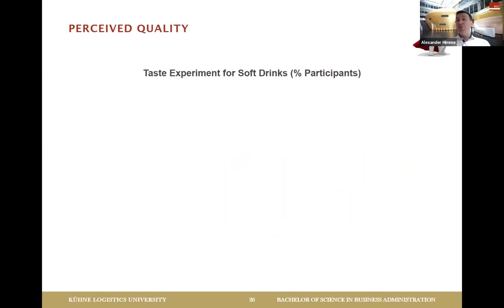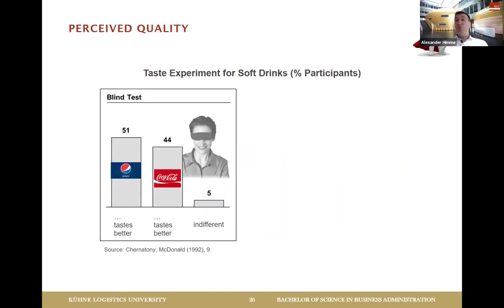The last aspect of risk reduction for customers is how brands develop quality perception. You may know the very famous Coca-Cola vs. Pepsi experiment. Researchers gave participants two cans of soda with their eyes closed and asked which one tasted better. In the blind test, the result was more or less equal between Pepsi and Coca-Cola.